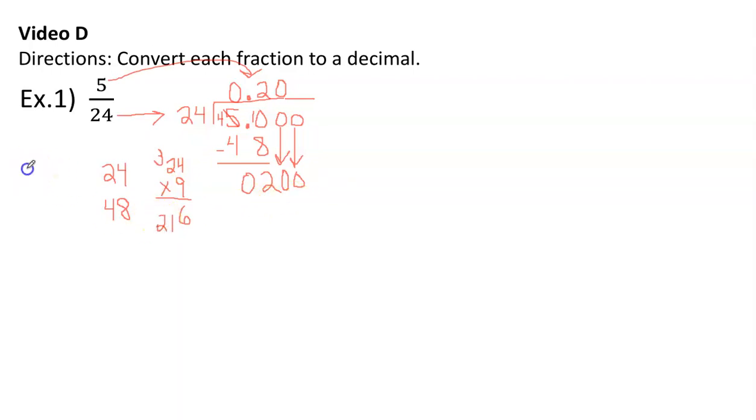And 216 is too much. So I'm going to multiply 24 times 8 and see how that works out. So 4 times 8 is 32, carry the 3. 8 times 2 is 16, plus 3. We're at 19. So 192. And that will work. 24 times 8 is what worked. 192 is close to 200, but it's not over 200. And then 200 minus 192 gives me a remainder of 8.